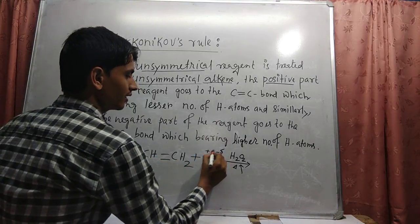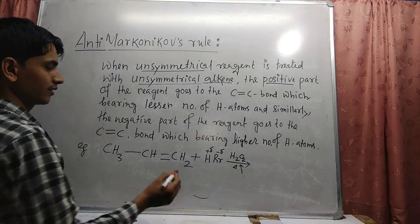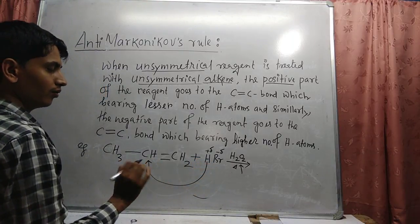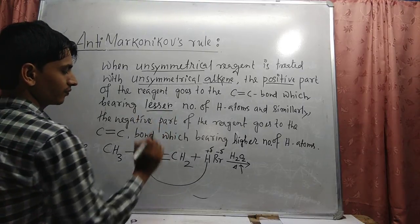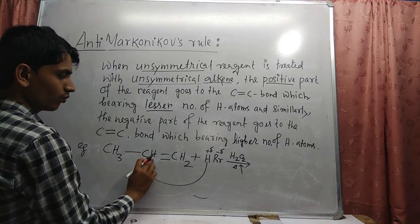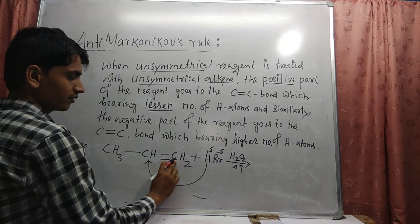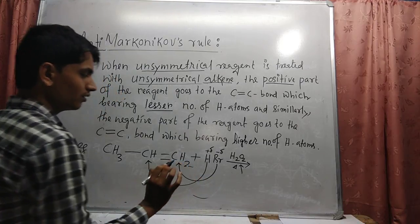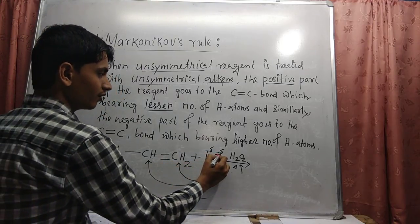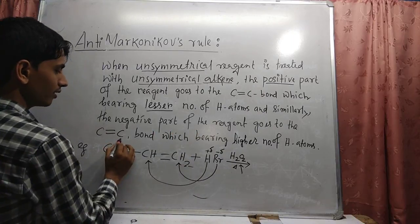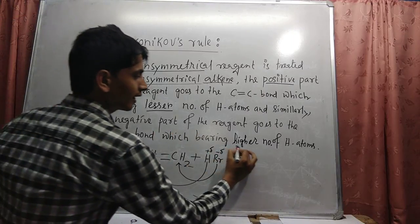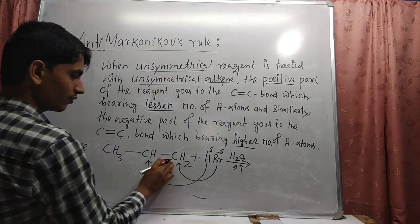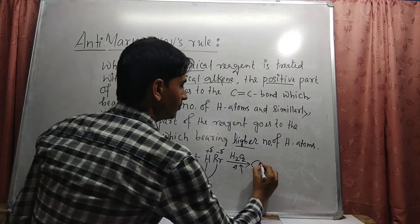The positive part of the reagent goes to the carbon-carbon double bond bearing the less number of hydrogen atoms. Here, hydrogen 1 and hydrogen 2 are attached to that carbon atom. Therefore, bromine will attach in this position, because the negative part of the reagent goes to the carbon-carbon double bond bearing the highest number of hydrogen atoms. Due to the heating process, the double bond will break and form the product.